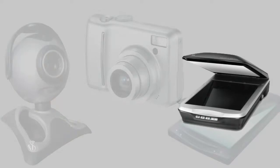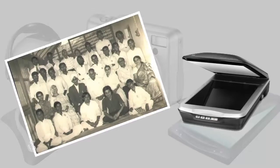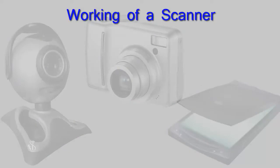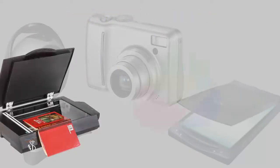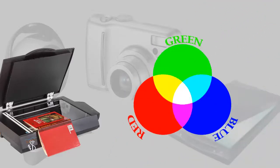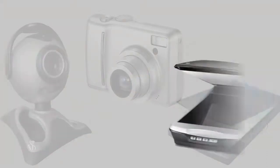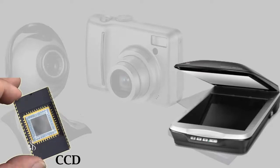A scanner can do a lot of tasks quickly and easily. We can scan all our old photographs and get fresh printouts. A scanner simply accepts all information in the form of RGB — that is, Red, Green, Blue — and then performs operations on this information and feeds input to the computer. Nowadays, new scanners have either a CCD (Charge Coupled Device) or CIS (Contact Image Sensor), both of which are used as image sensors.